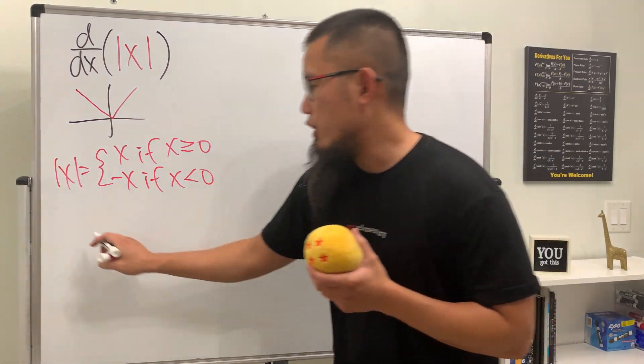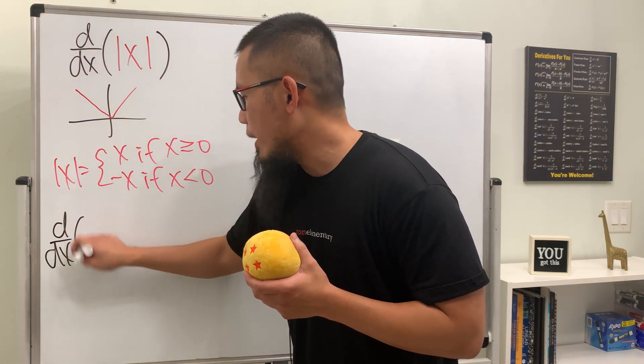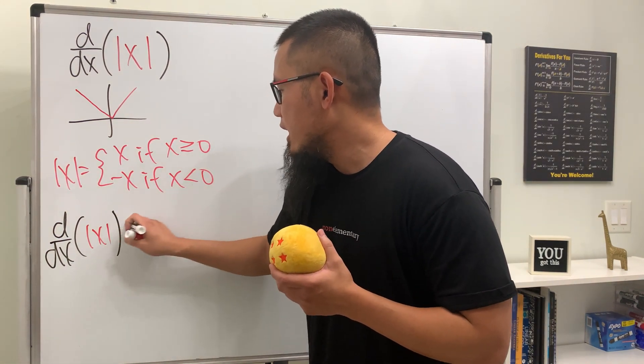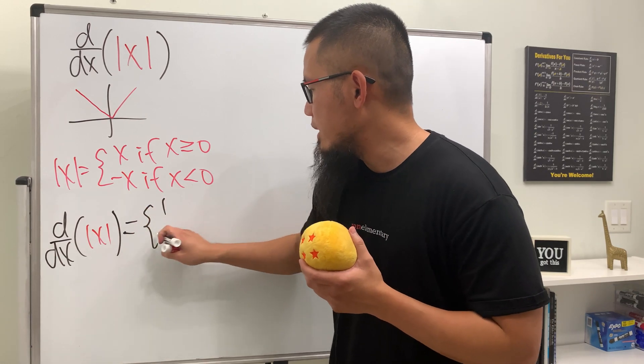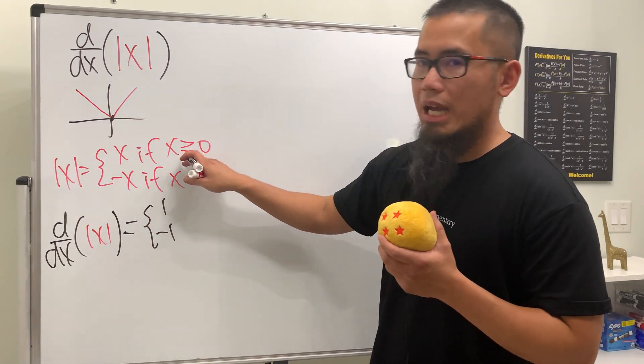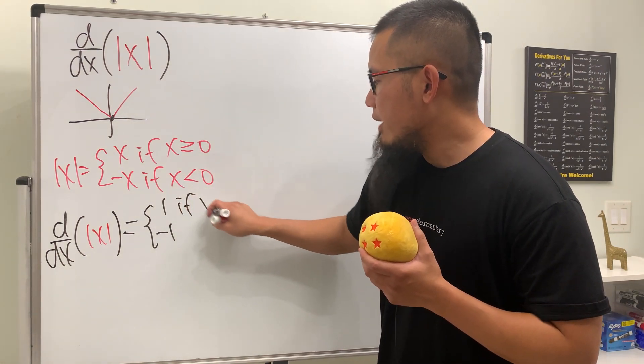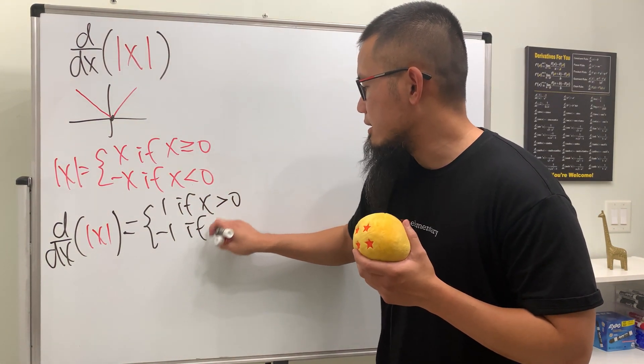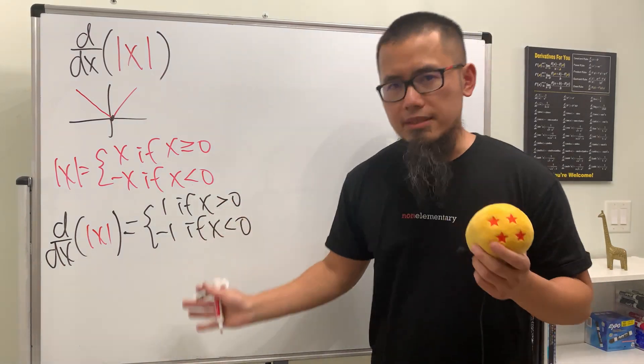Now we can differentiate absolute of x piecewise, which is going to be really nice. We just get one and negative one. But remember, we cannot differentiate at the corner, so we do not include zero. We write if x is greater than zero, if x is less than zero. But this is not so cool, right?